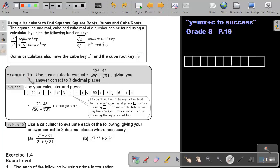Now, let's look at example 15. Using a calculator to evaluate this, giving your answer correct to three decimal places. Due to the fact that there is more than one operation on top as well as the bottom, the best will be to put in brackets, so that the calculator can first work out the top, then work out the bottom, and then do the final division.